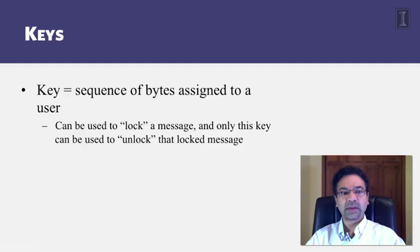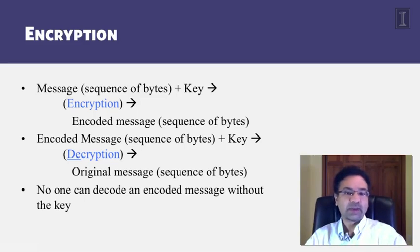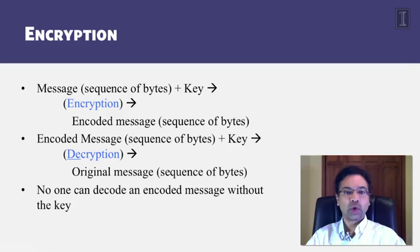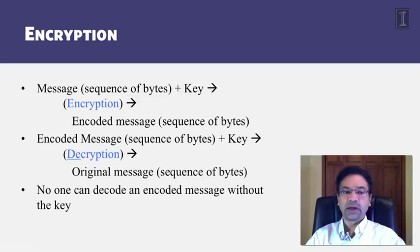The way you use a key is you take a message, apply the key on it — this process is known as encryption. This leads to an encoded message, which is a sequence of bytes that would not make sense to any attacker who intercepts the message on the network, unless the attacker also has access to the key. Only those with access to the key can take the encoded message, apply the key, and use decryption to get back the original message. Without the key, decryption yields garbage.